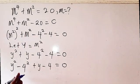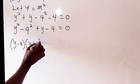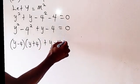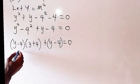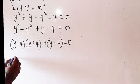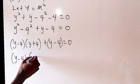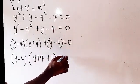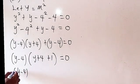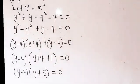From here we can rewrite this using the difference of two squares, so we have y minus 4 times y plus 4, then plus y minus 4, equals 0. We can see we have y minus 4 appearing twice, so we factorize y minus 4 out, and dividing through we are left with y plus 4 plus 1, giving y minus 4 times y plus 5 equals 0.